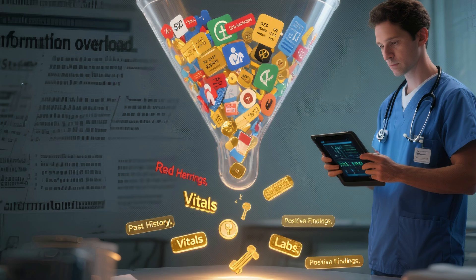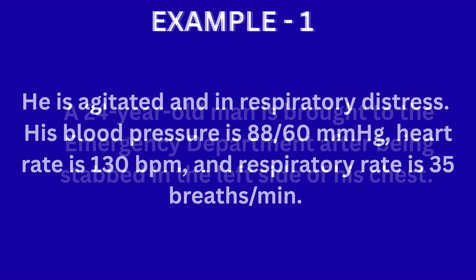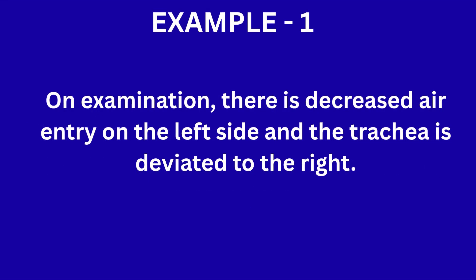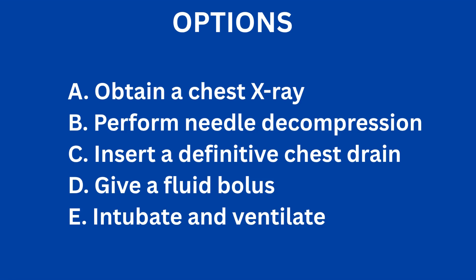Theory is great, but let's see this method in action. Example 1: A 24-year-old man is brought to the emergency department after being stabbed in the left side of the chest. He is agitated and in respiratory distress. His blood pressure is 88/60 mmHg, heart rate is 130 beats per minute, and respiratory rate is 35 breaths per minute. On examination, there is decreased air entry on the left side and the trachea is deviated to the right. The question is: what is the single most appropriate immediate step in management? Options are: A) chest X-ray, B) needle decompression, C) definitive chest drain, D) fluid bolus, E) intubate and ventilate.